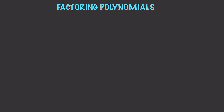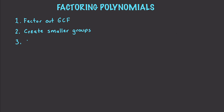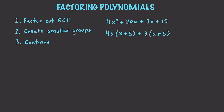We are also going to be able to factor by grouping. To do that, we take a couple steps: first, factor out the greatest common factor; second, create smaller groups and factor out the greatest common factor from each; and third, continue until it's no longer possible. So let's say we have 4x squared plus 20x plus 3x plus 15. We find a common factor of x plus 5 from these groups: 4x(x + 5) plus 3(x + 5). Then we use the distributive property to factor out the common factor, giving us (x + 5)(4x + 3).